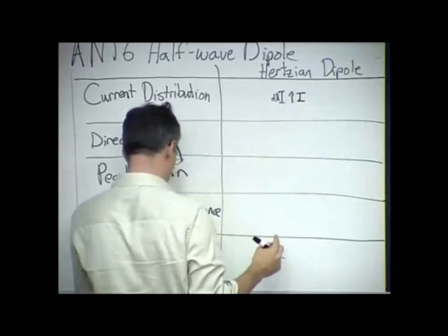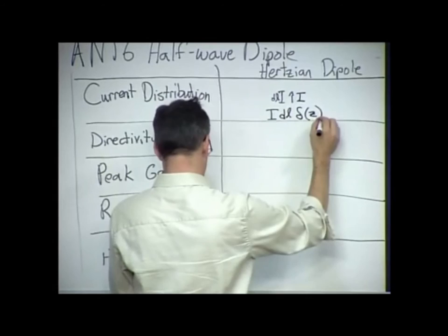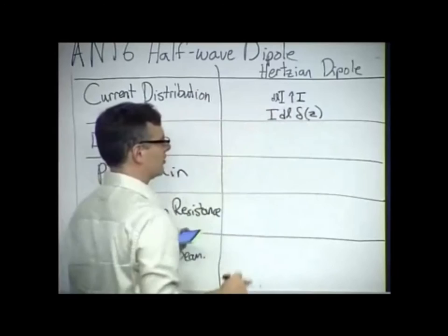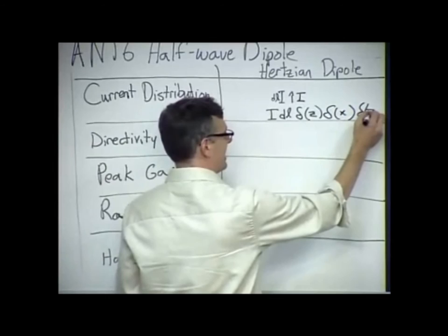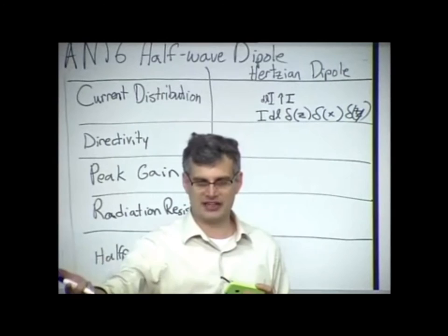I would mathematically represent that as IDL with a delta function. If I were describing the current along the z-axis, I would use this mathematical structure. In fact, if I added a delta x and a delta y, this is the mathematical function that I could put into the previous analysis to solve for the Hertzian dipole, the vector magnetic potential, and then electric field, and then magnetic field.